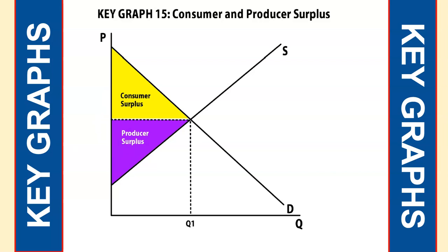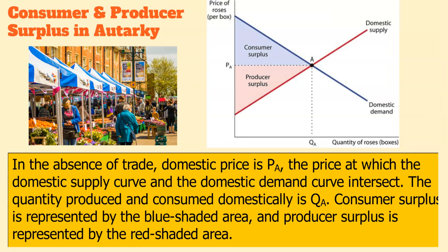This is the basic model we'll use in looking at international trade — key graph 15, consumer and producer surplus. In autarky, the price is at the autarky equilibrium — no surprises: consumer surplus above the price, producer surplus below the price. That's just the price we sell at within our country.